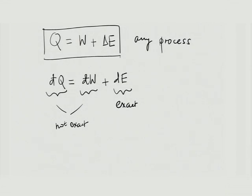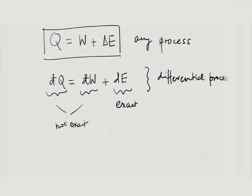Because dE is an exact differential, delta E is a property change — it is a point function, a difference in energy between two points — whereas Q and W are path functions. If you have states 1 and 2, delta E for any process is fixed as E₁ minus E₂, whereas Q and W may be different for different processes. The units of E, W, and Q are the same. For a small change in state this differential form can always be written, but unless it is a quasi-static process, you cannot integrate it.